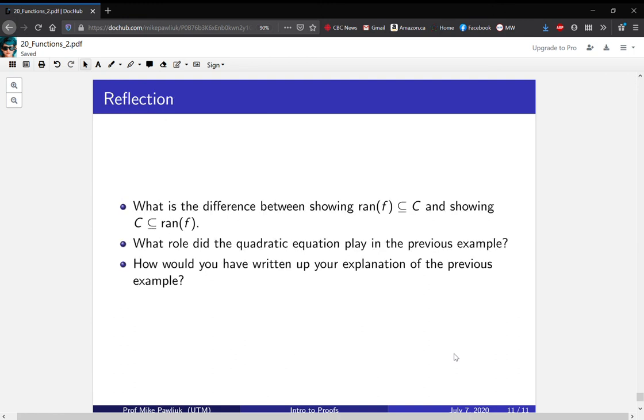Let's end with some reflection. What is the difference between showing that the range is a subset of C, and showing that C is a subset of the range? What role did the quadratic equation play in the previous example? Most importantly, how would you have written up your explanation of the previous example? I did it one way, but there's many different ways to do it, and you should pick one that makes sense to you.